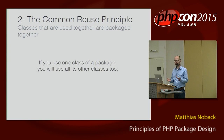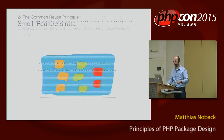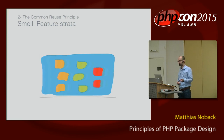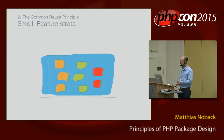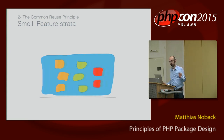The rule says you shouldn't just put classes in a package if they can be used separately. If you see a use case for some of the classes in the package, move them outside and make sure that you can support that particular use case. One of the package smells that helps you recognize whether something is wrong with the Common Reuse Principle is what I call feature strata — columns of features in the package. The orange classes together form one feature, and you can use this feature in isolation, completely disregarding the other parts of the package.